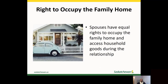Married spouses and common-law spouses who have lived together at least two years have equal rights to occupy the family home and access household goods. This is true even if only one spouse's name is on the title. Although the Act doesn't apply to couples who have lived together less than two years, if they both hold title to the home, they have equal rights to occupy the home. In situations where a couple has not lived together at least two years and only one person's name is on the title, the title holder can ask the non-title holder to leave.